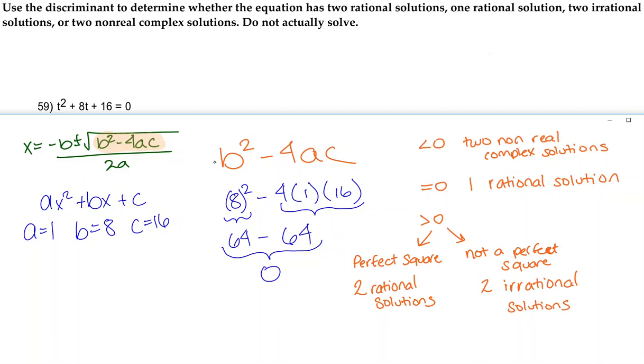So here we have that the discriminant equals 0, and because it equals 0, we're going to have one rational solution if we were to solve the quadratic formula by plugging in these values.